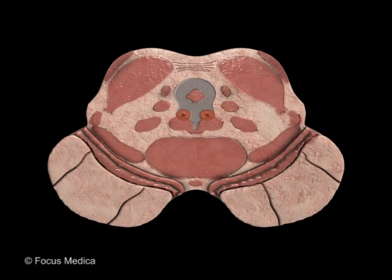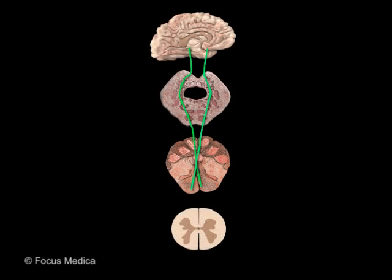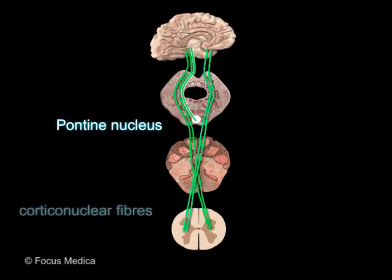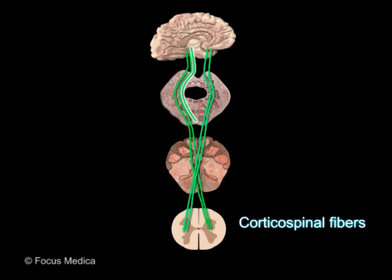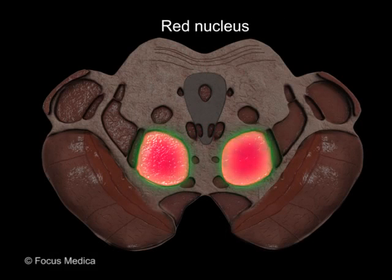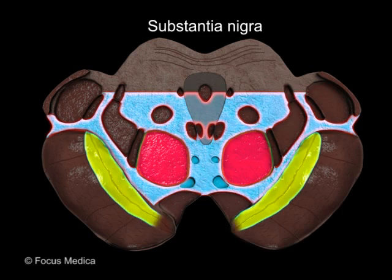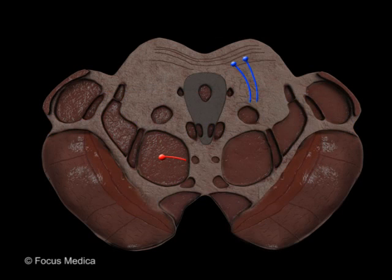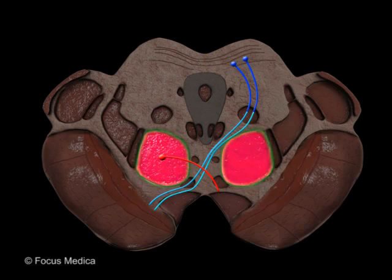The midbrain can be divided into tectum and tegmentum. Some of the fibers descending from the cerebrum end in the pontine nuclei — these are called corticonuclear fibers. The rest of the fibers descend into the medulla, decussate in the pyramid, and reach the spinal cord as corticospinal fibers. In front of it is the medial longitudinal bundle. The red nucleus is the most distinguishing feature of the midbrain at this level, located in the tegmentum behind the substantia nigra. The dorsal and ventral tegmental decussations are located in the midline in front of the medial longitudinal fasciculus, and the red nucleus is large and lateral to both.